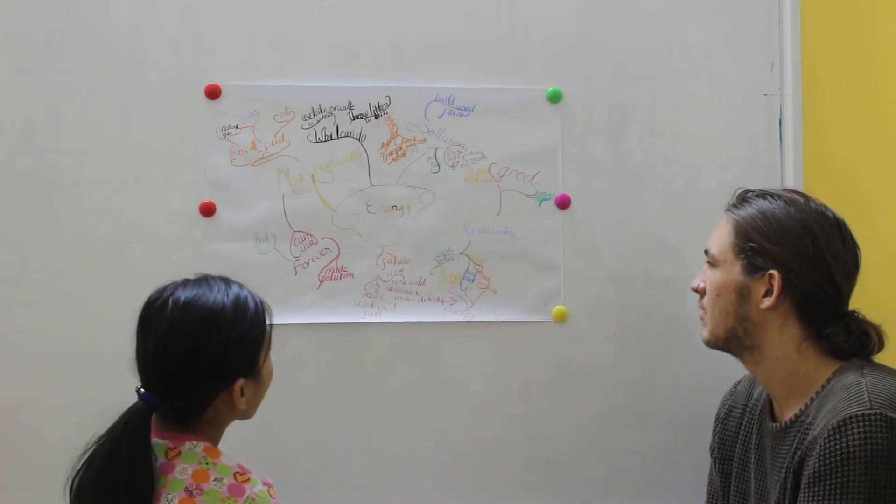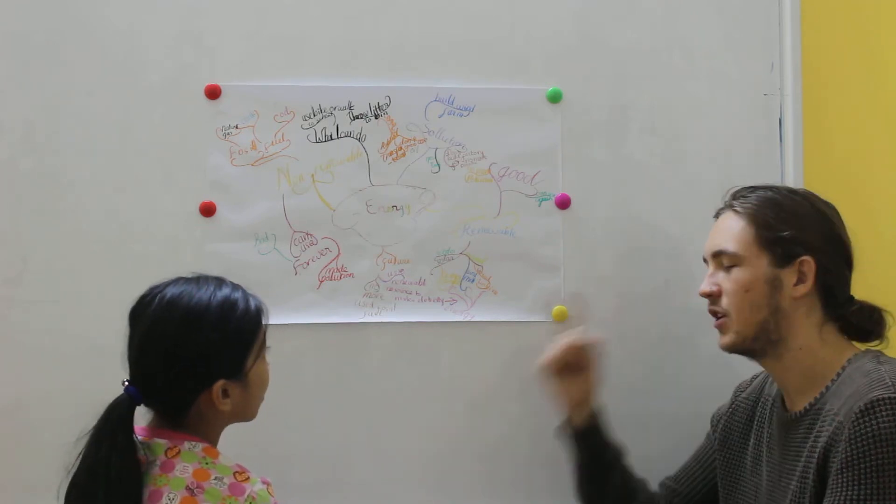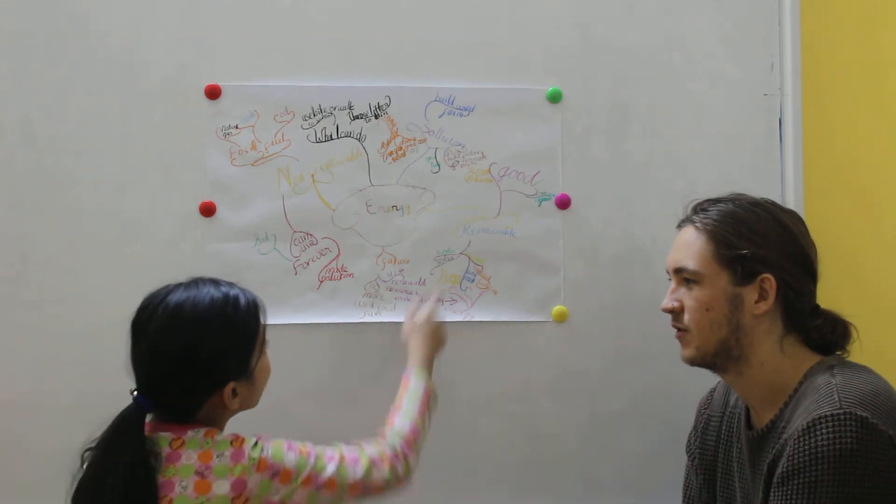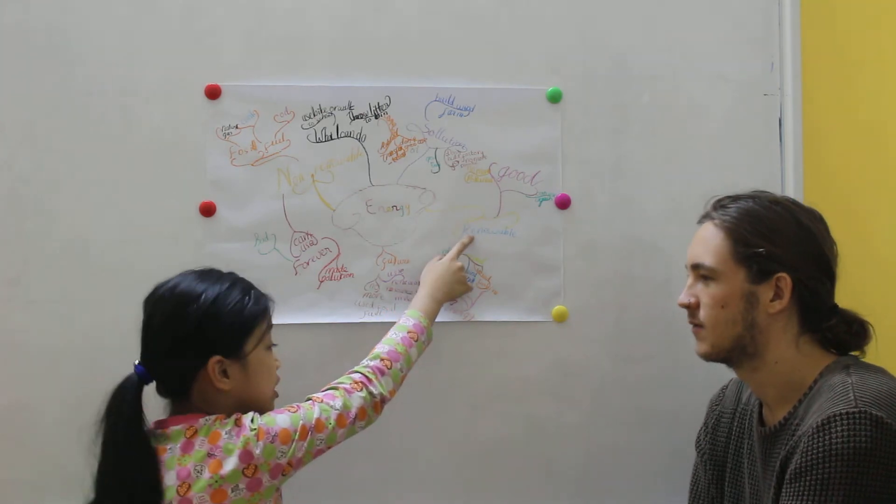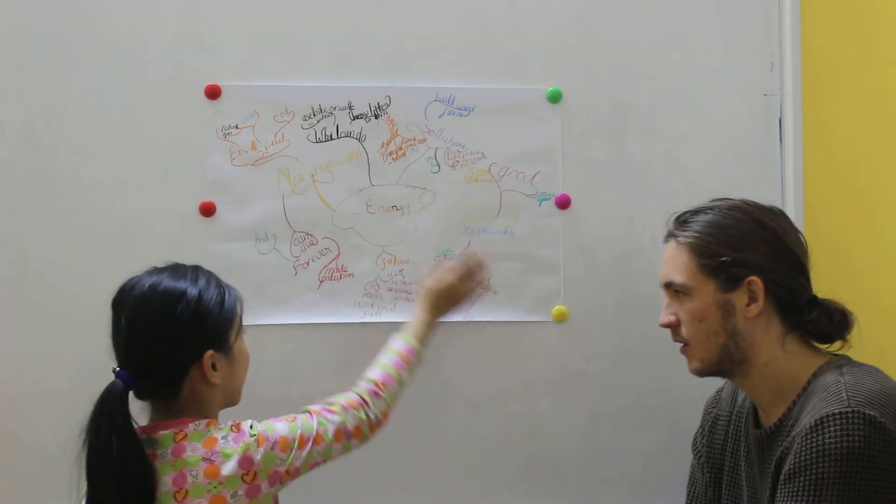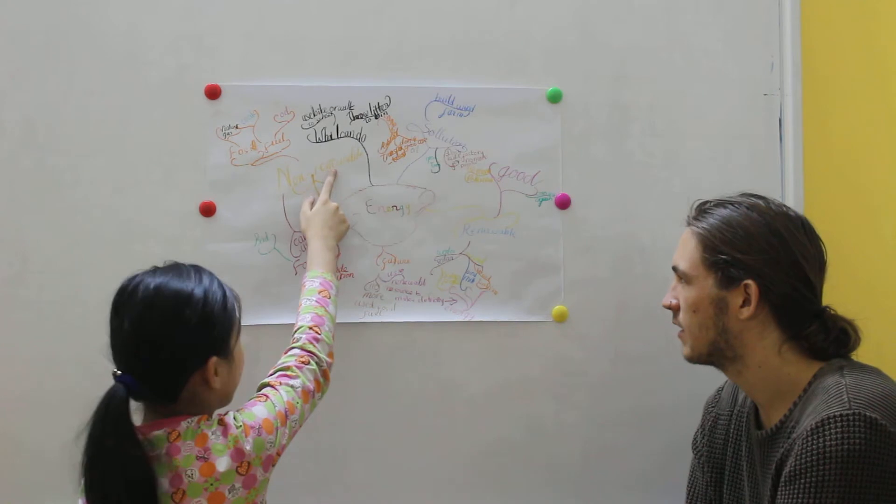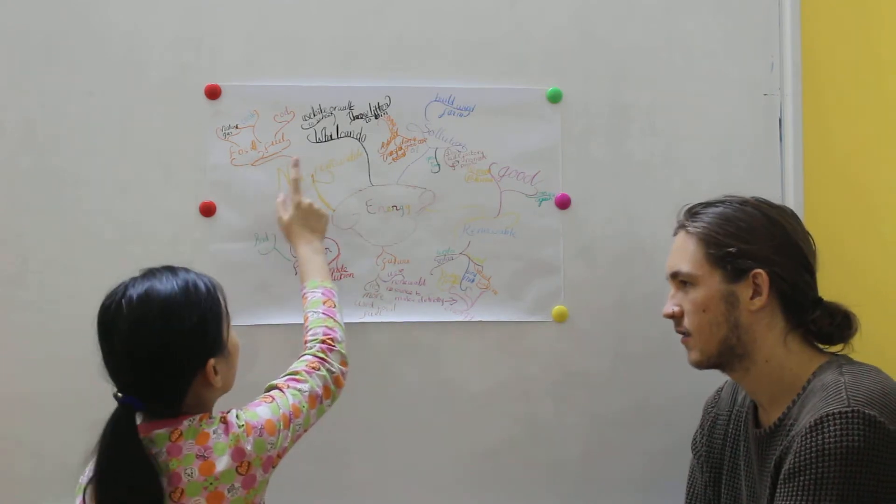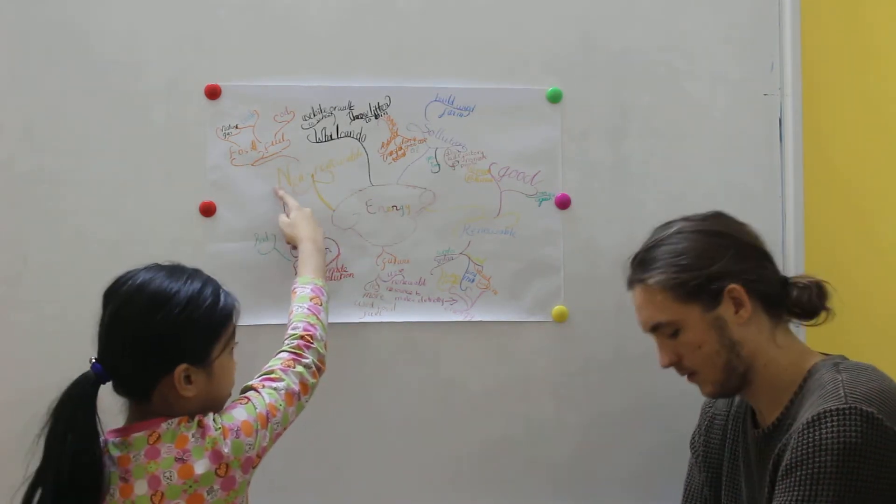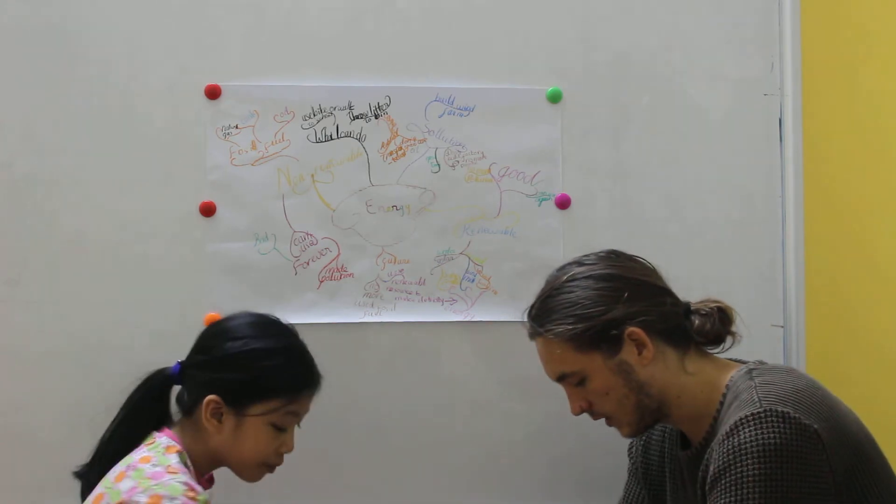So renewable, what is the difference between renewable and non-renewable? Renewable is when we use it again or replace it again, it will never disappear. Okay. Non-renewable is the opposite. When we use it, it will disappear forever. Okay. Well done, Chi.